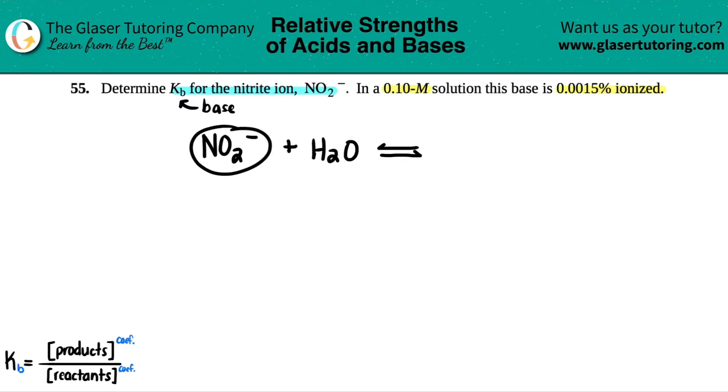We have to find the conjugate acid. Since NO2 is a base, it will always gain a hydrogen. So it would be HNO2. And vice versa, if this is the acid reacting with the base, the acid always drops a hydrogen. So this would be OH minus.